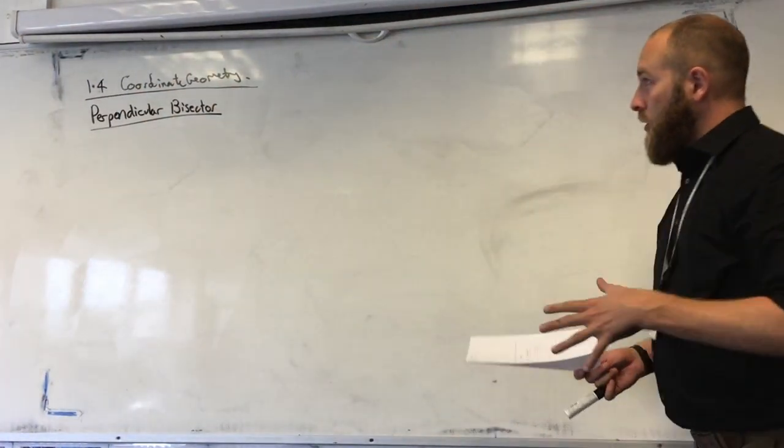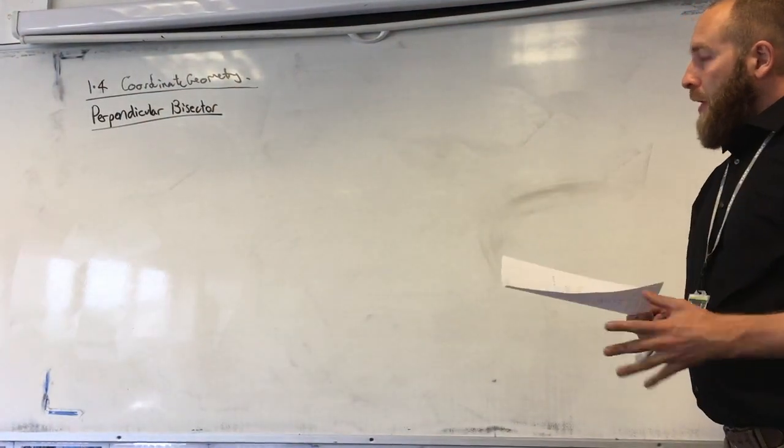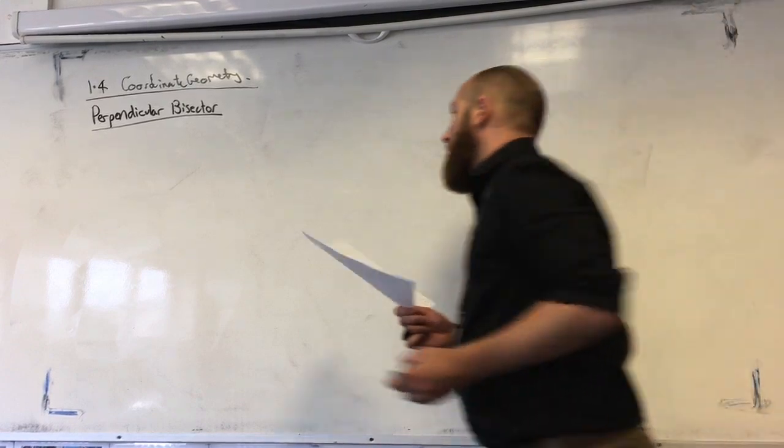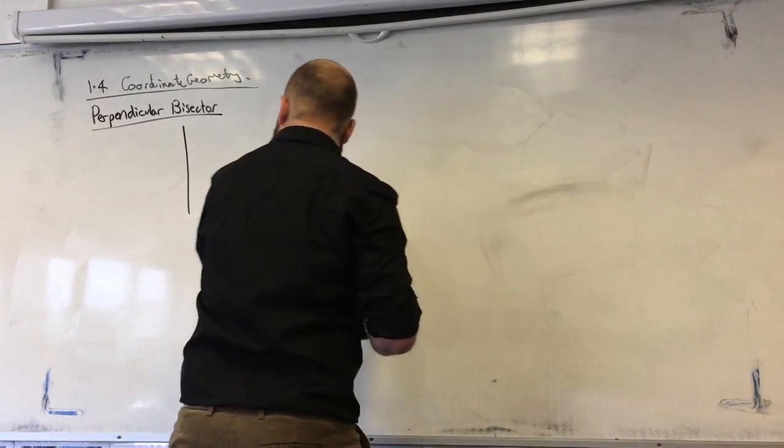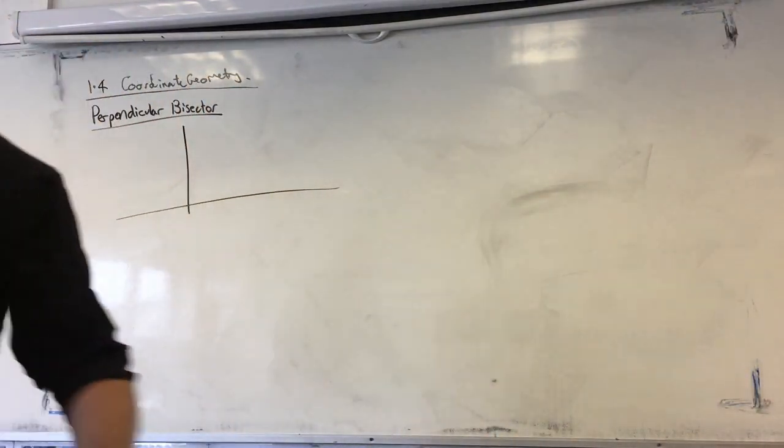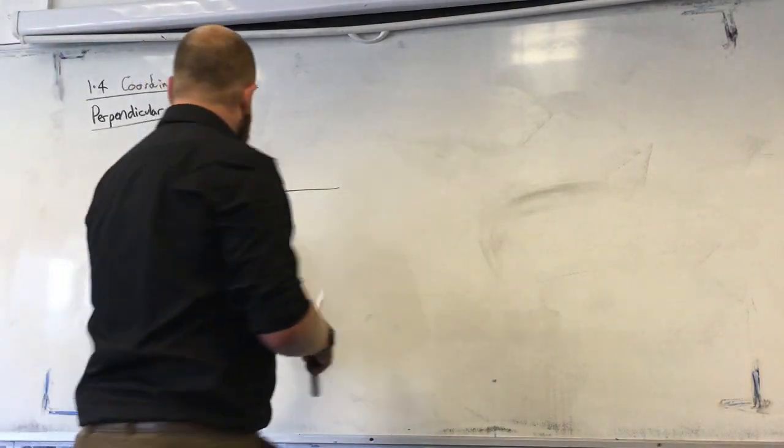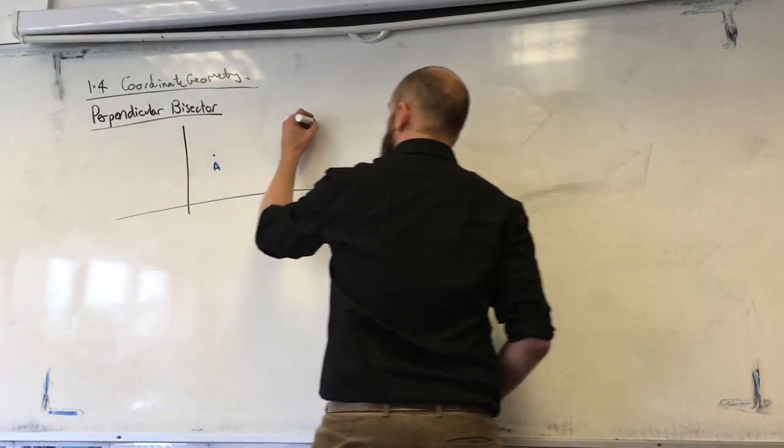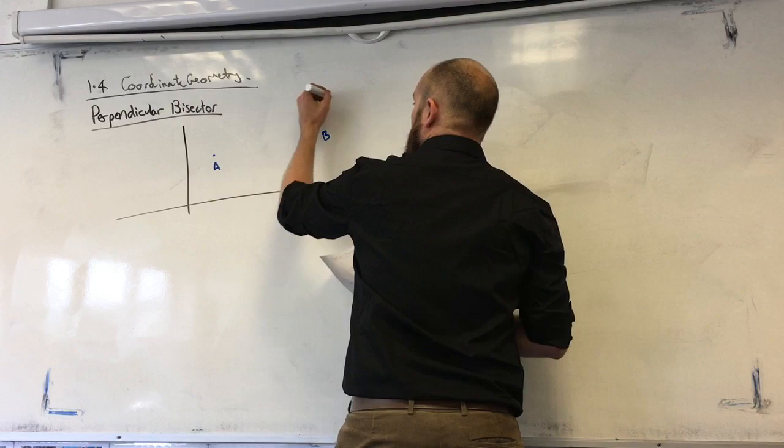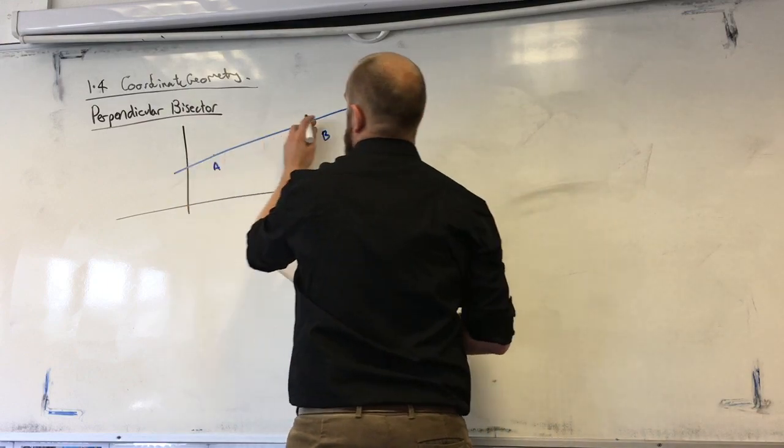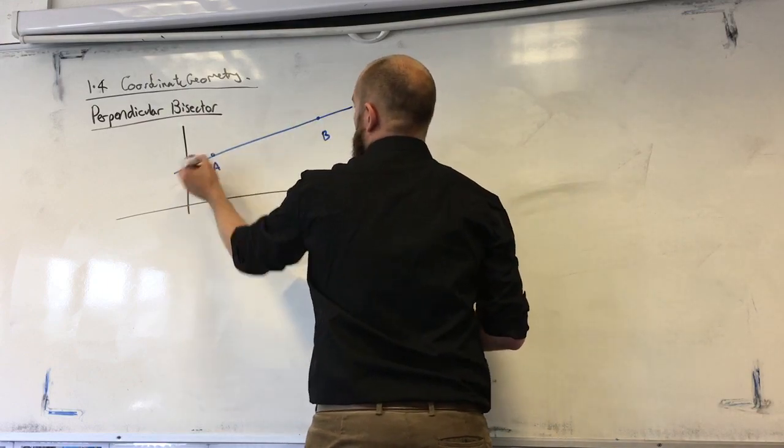So 1.4, a really short topic this one. We're looking at perpendicular bisectors. So to show you what that is, if we have a line, or even a line segment, perhaps from A to B.